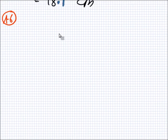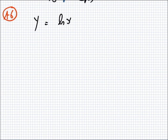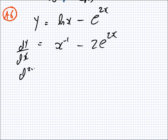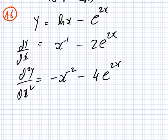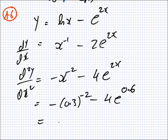A6. y equals log x minus e to the power 2x. What is the second derivative? The first derivative is 1 over x minus 2e to the 2x, so that's x to the minus 1 minus 2e to the 2x. And the second derivative is minus x to the minus 2 minus 4e to the 2x. We substitute in 0.3, giving minus 0.3 to the power minus 2 minus 4 times e to the 0.6. To four significant figures the answer is minus 3.9.